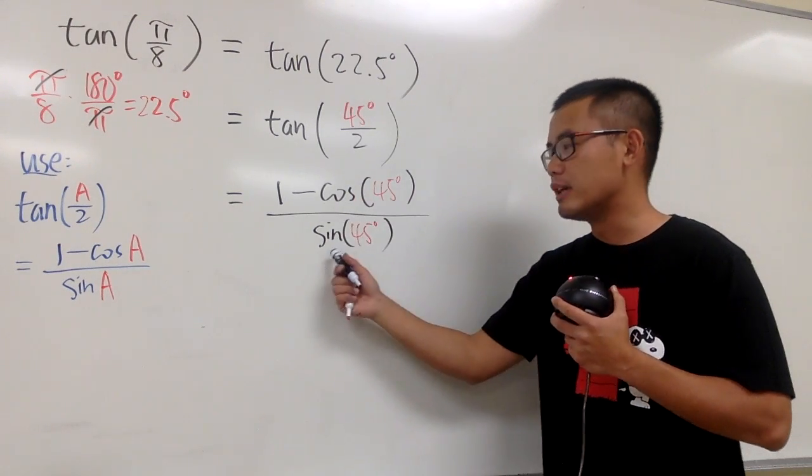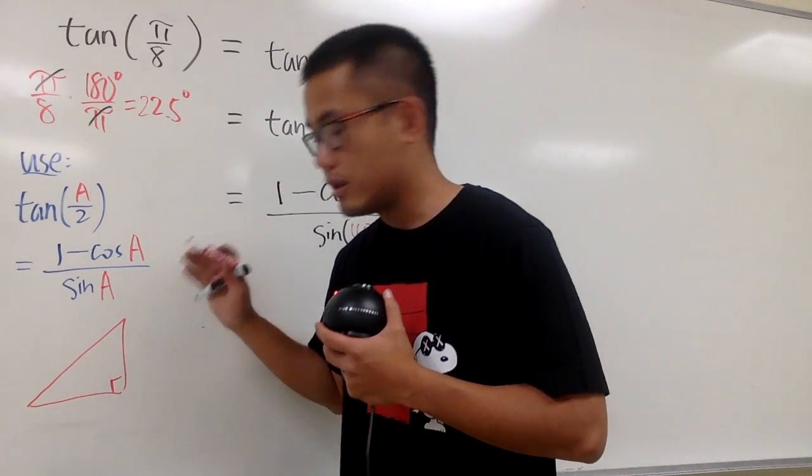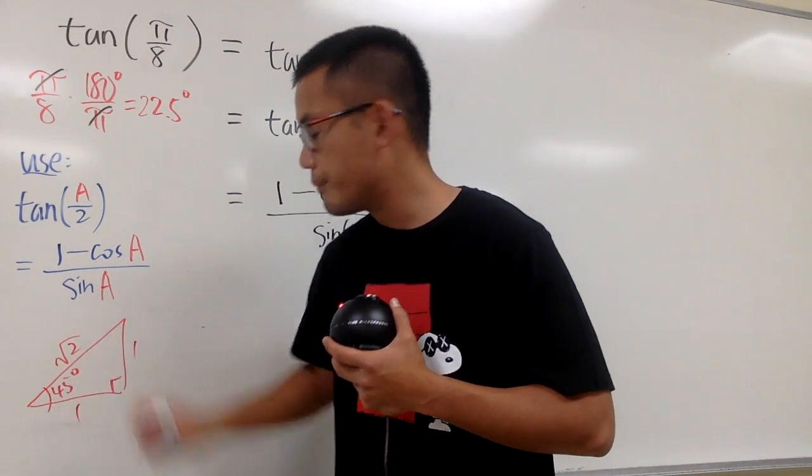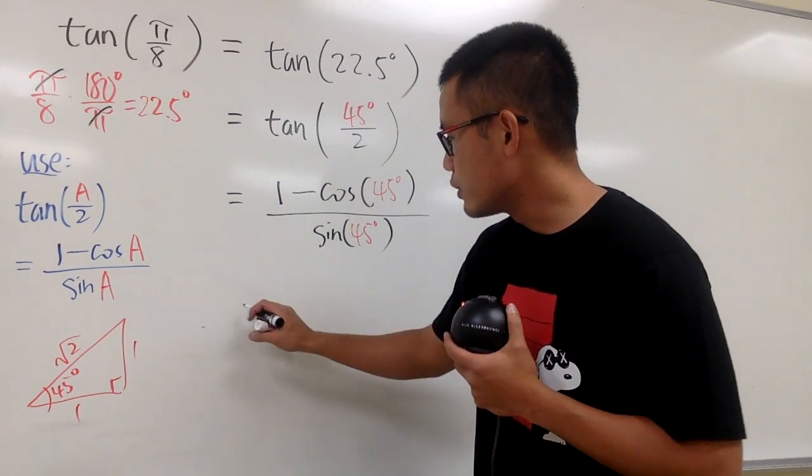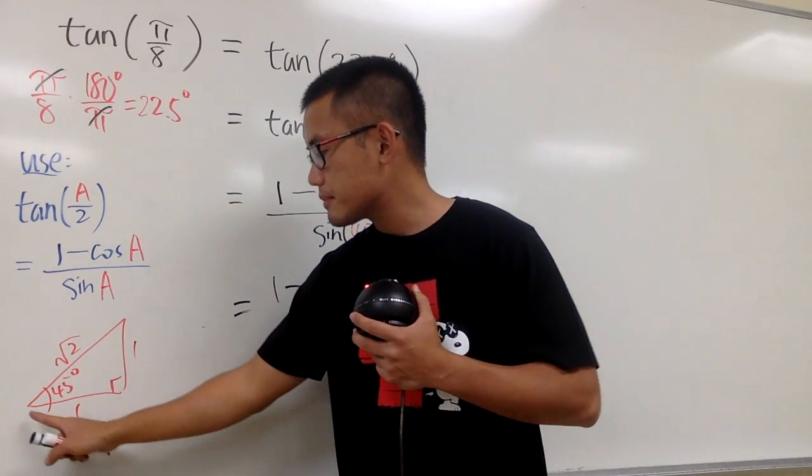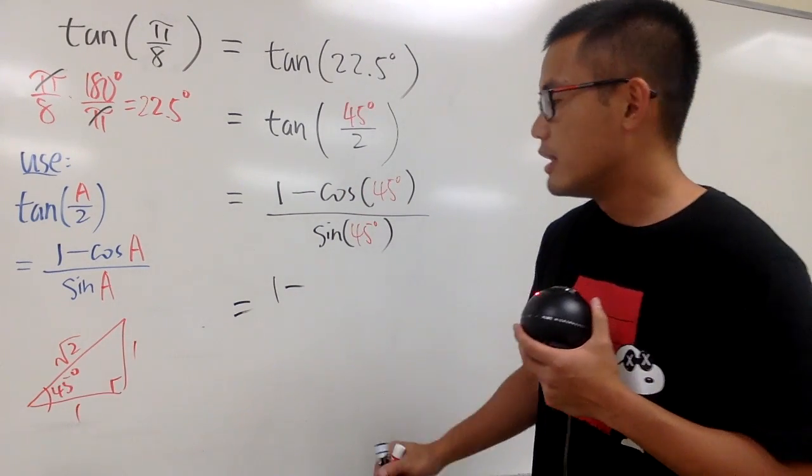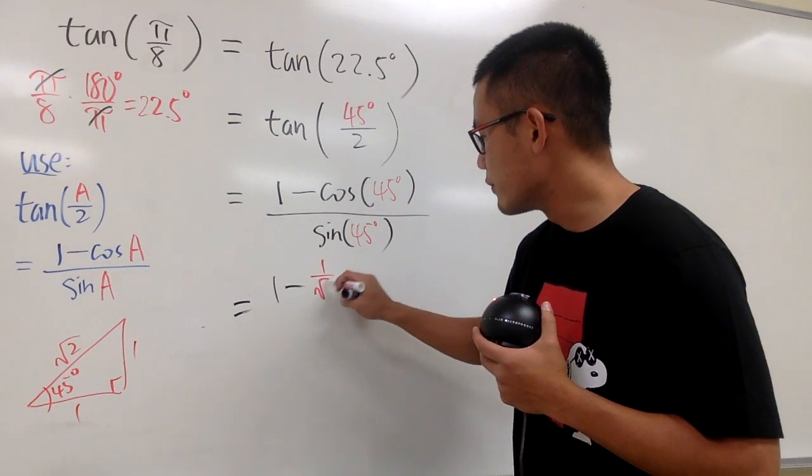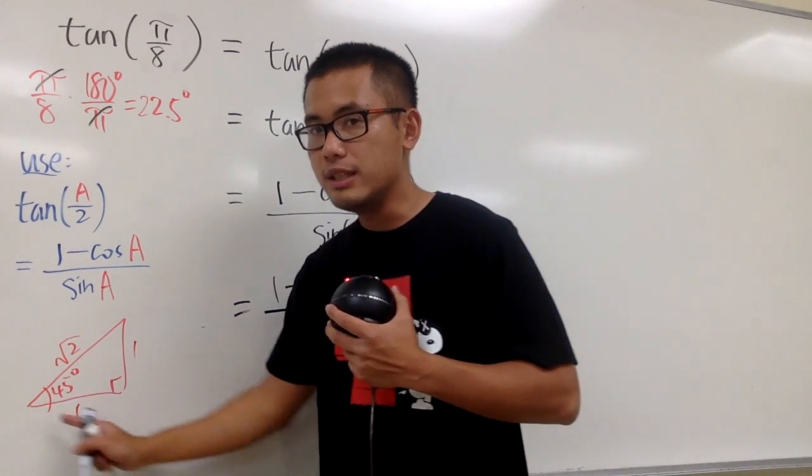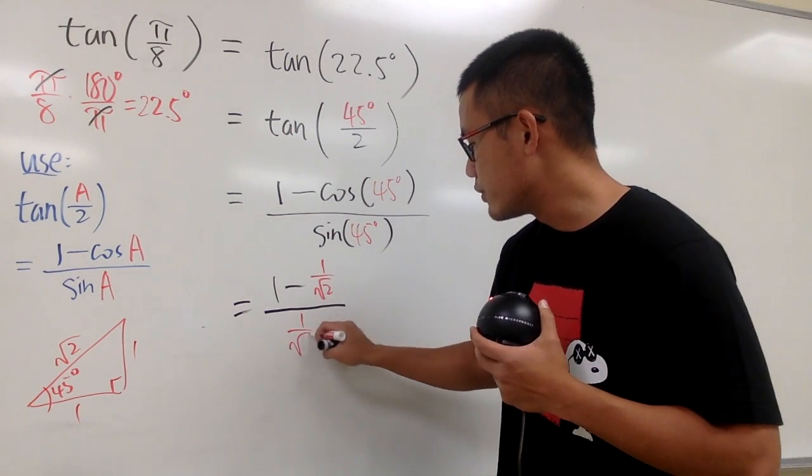Now I need to figure out cosine of 45 degrees and sine of 45 degrees. Let's look at a special right triangle: here's the triangle with a 45-degree angle, and the sides are 1, 1, and √2. Cosine of 45 degrees is adjacent over hypotenuse, which is 1 over √2. Sine of 45 degrees is opposite over hypotenuse, also 1 over √2.